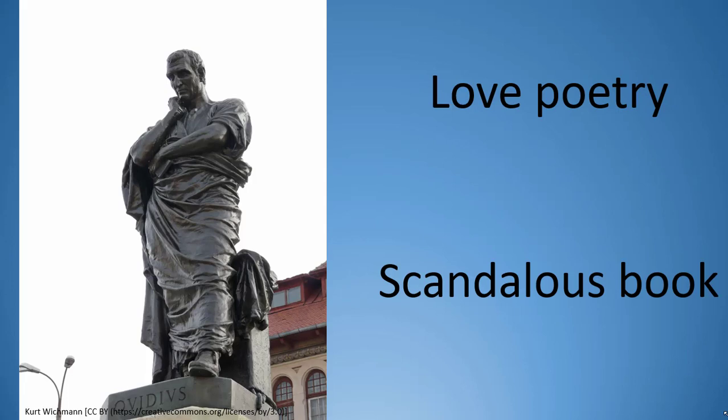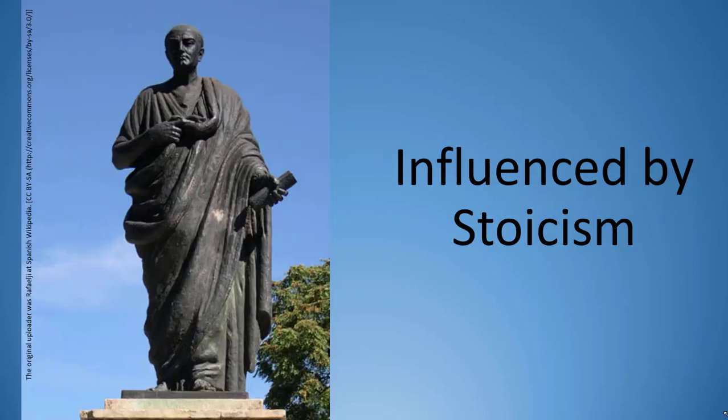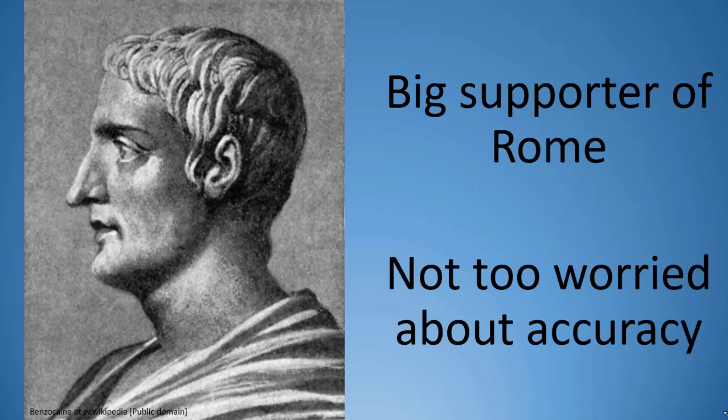The poet Ovid wrote love poems and scandalized many people, Augustus included, with a book dedicated to the art of seducing a married woman. Ovid was banished from Rome after involvement in a sex scandal, possibly involving Augustus' daughter. The historian Livy wrote a history of the Republic that carried on into the Empire; Livy believed history should teach moral lessons and that we can use examples of past figures to learn from and either emulate or avoid. The following century saw Latin prose of a quality not quite as good as before — making this literature part of the silver age as opposed to the first century's golden age. Seneca was heavily influenced by Stoic philosophy, while the historian Tacitus wrote a history of the Empire but was more a cheerleader of Roman imperialism and not overly concerned with factual accuracy.